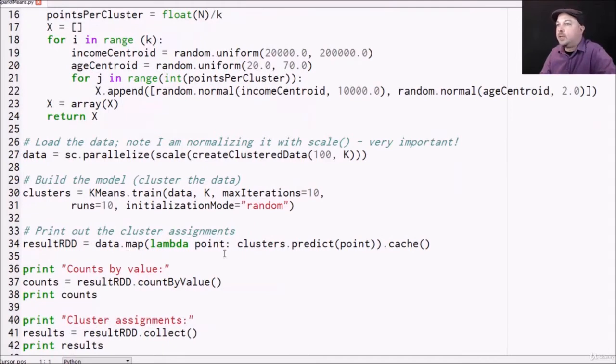All right, now we can play with that. So let's start by printing out the cluster assignments for each one of our points. So we're going to take our original data and map it, that is transform it using this Lambda function.